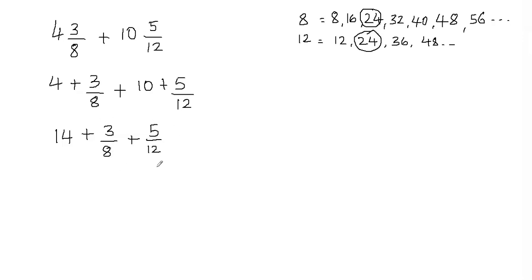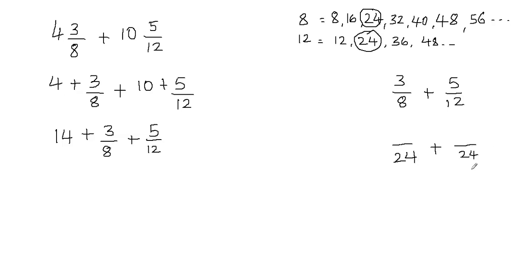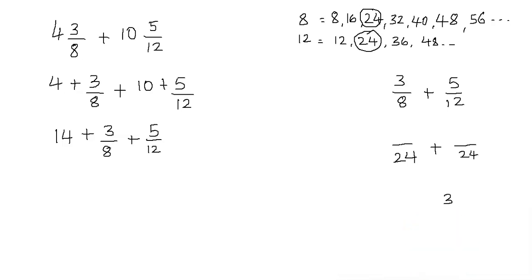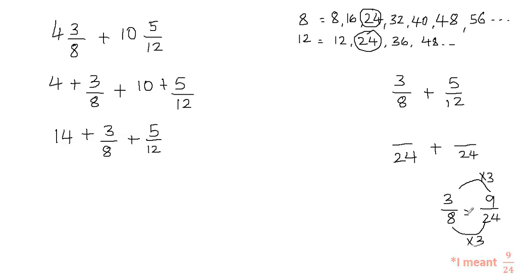Now we're going to use this least common multiple to make the denominators equal. Let's add these fractions separately — forget about the whole number for now. I want my new fractions' denominator to be 24, because that's my least common multiple. I need to think: how do I get from 8 to 24? I can multiply the denominator by 3, because 8 times 3 is 24. If I'm multiplying my denominator by 3, I also have to multiply my numerator by 3 to keep my fraction balanced. And 3 times 3 is 9. So 3 eighths is equal to 9 over 24 — these fractions are equivalent.